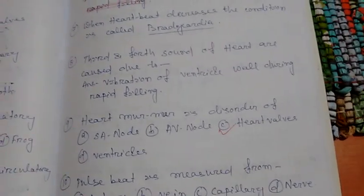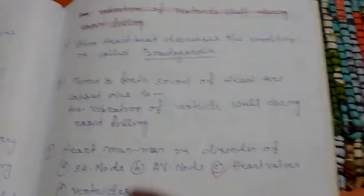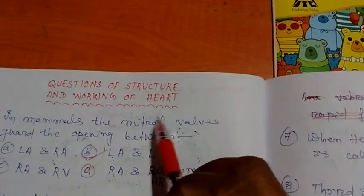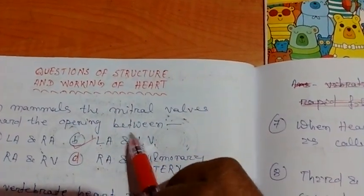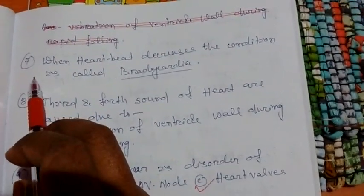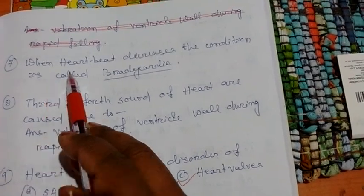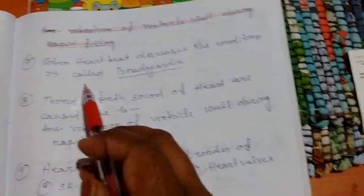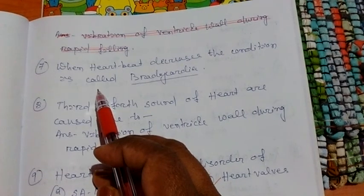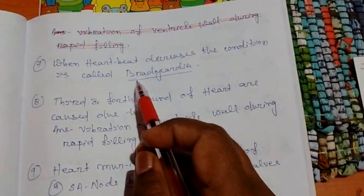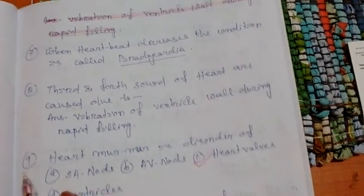I am coming with the rest of the questions of structure and working of human heart. Question number 7: when heartbeat is decreased, especially during sleeping, that condition is called bradycardia.